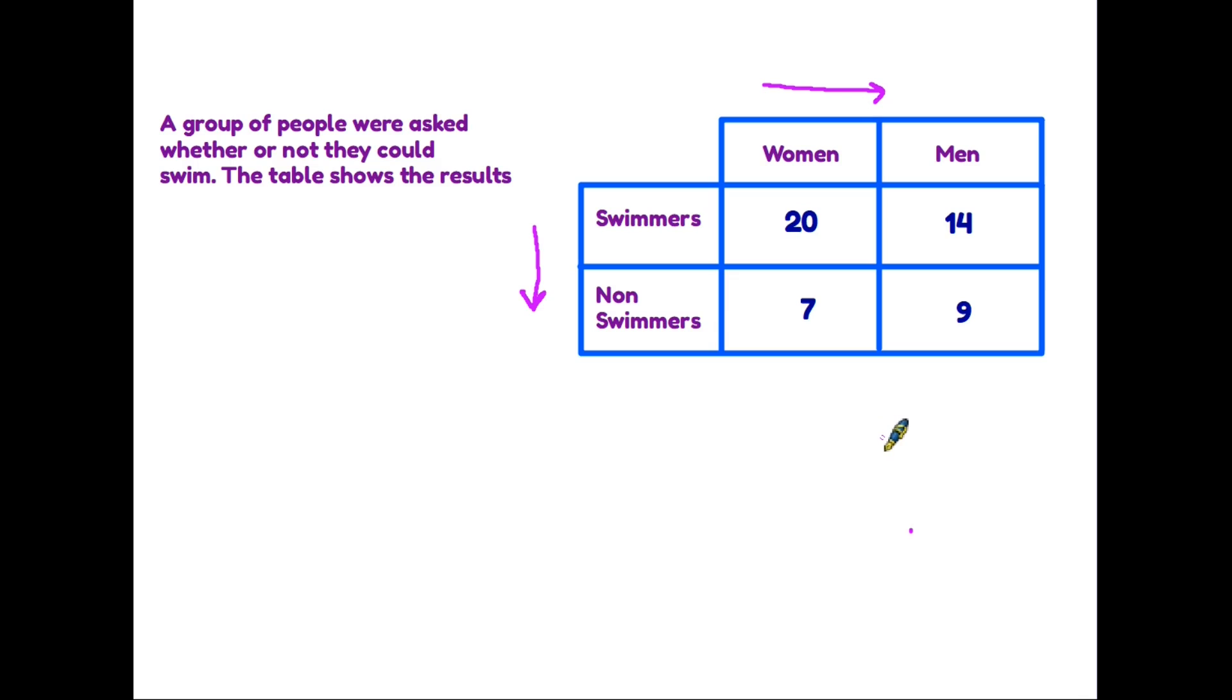So let's have a look at the information in the table. It tells us that in the women's group we have 20 women who can swim and 7 who can't. However men we have 14 swimmers and 9 non-swimmers. So to extract the information you need, if you are asked how many men cannot swim, you would look down the side for the non-swimmers, across the top for the men, and you look down and across and that tells us there are 9 male non-swimmers.